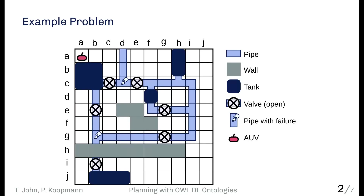Looking at this problem, there are two different aspects we need to capture for an automatic solution. The first is the world with different objects connected in certain ways, an initial state, and the goal of closing the valves so that no tank is connected to a pipe segment with a failure. The second aspect is more subtle: there is semantic information about these objects that is not obvious but that we as humans intuitively have — for example, the robot cannot be at a cell where there is a wall, because two physical objects cannot occupy the same space.